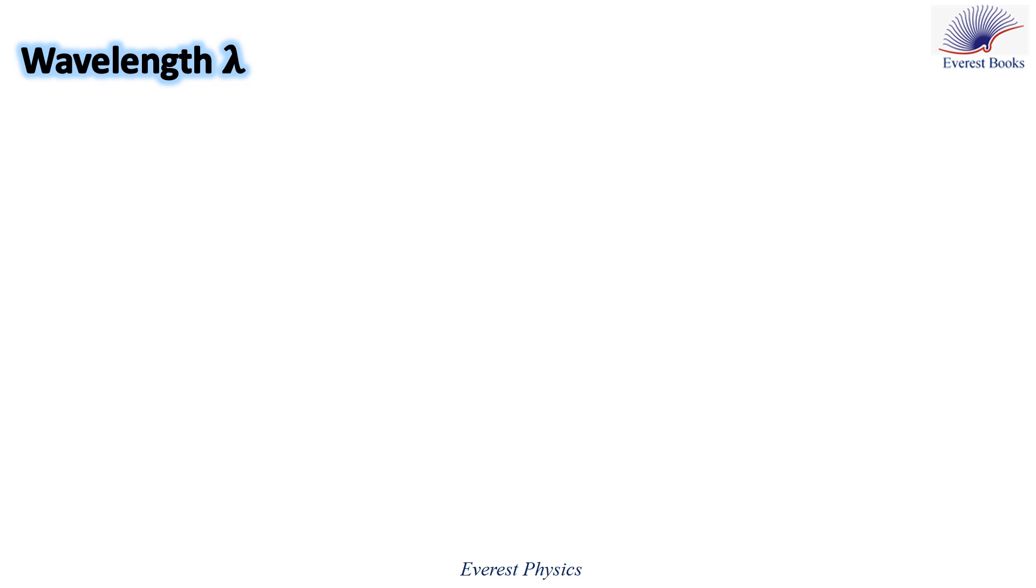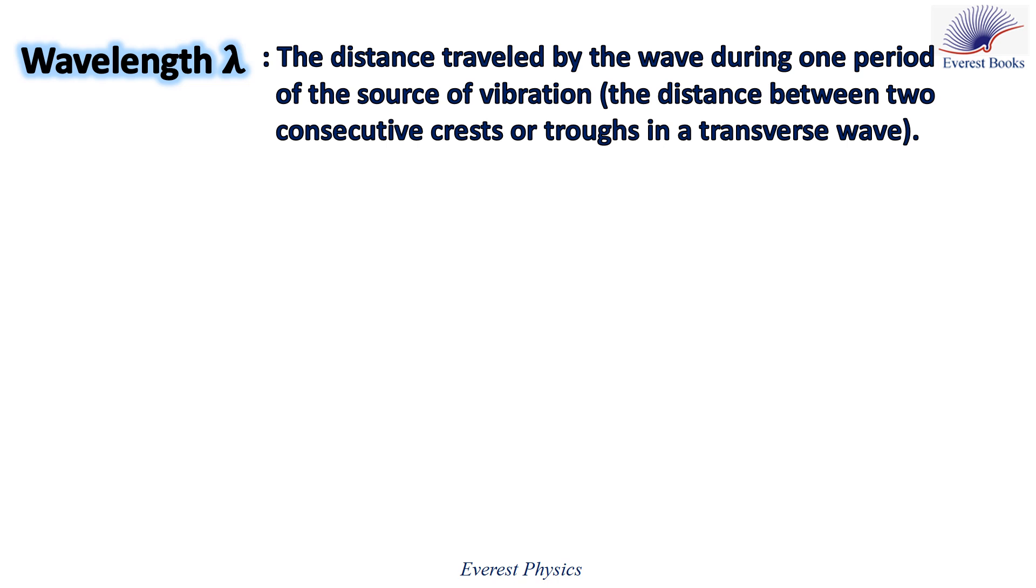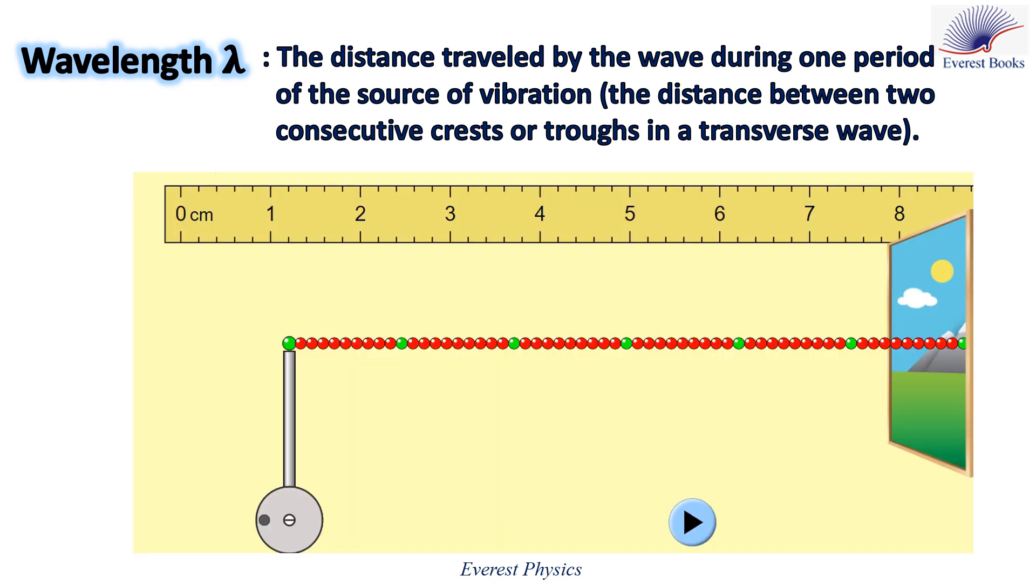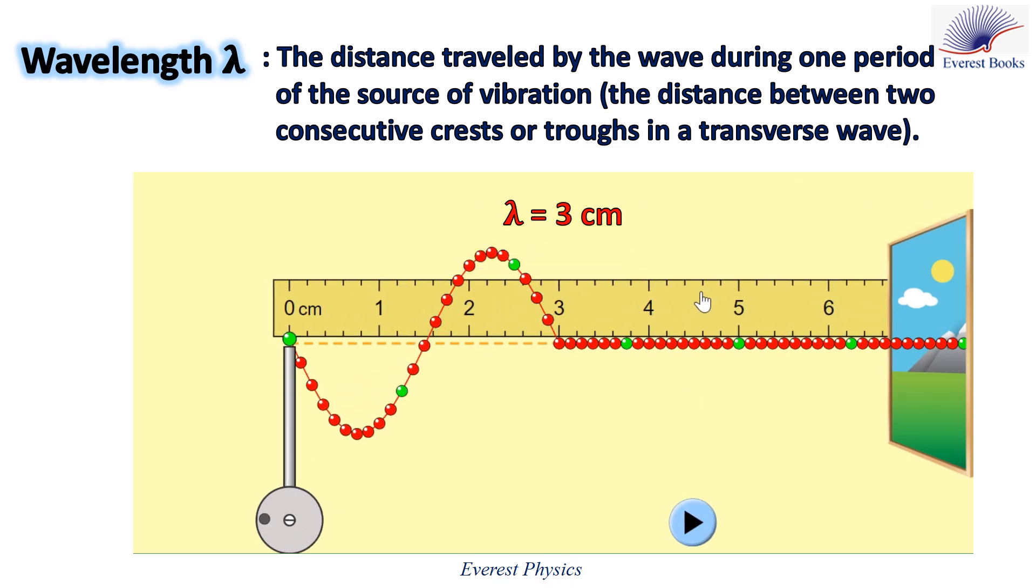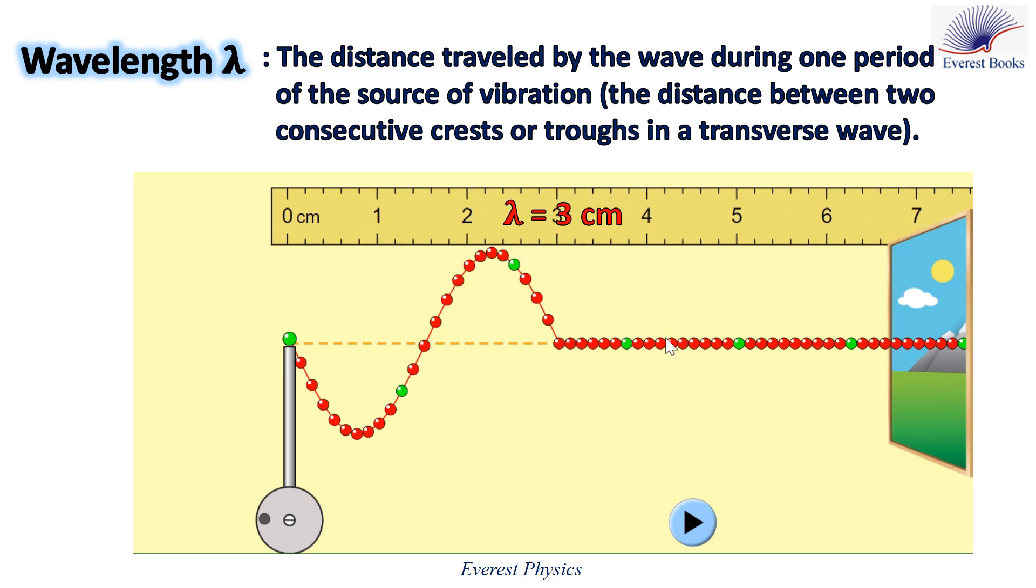The fifth property is the wavelength, which is the distance traveled by the wave during one period of the source of vibration, or the distance between two consecutive crests or troughs in a transverse wave. This wave travels only one wavelength, so the wavelength is 3 centimeters.